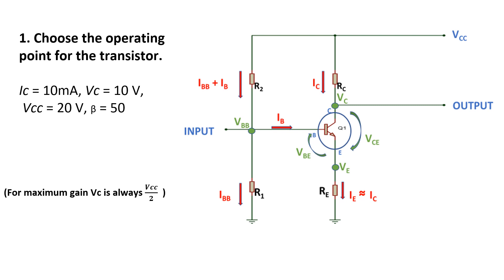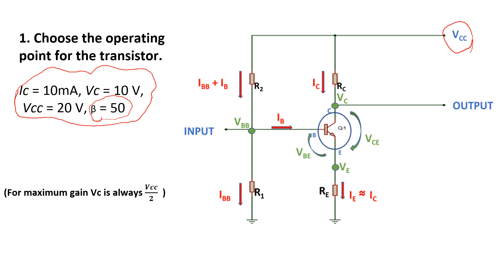Step number one: choose the operating point for the transistor. This means selecting the collector current IC, the collector voltage VC, and the power for the transistor, along with beta, which you get from the datasheet. In this example, I assume beta is 50, IC is 10 milliampere, and VC is 10 volts — the collector voltage should be half of the source voltage to get proper amplification. Our source voltage is 20 volts.